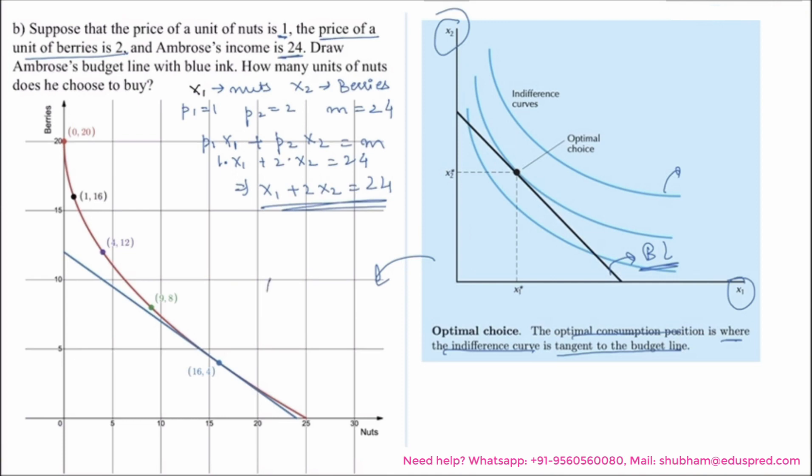And this consumption bundle is of the form X1, X2 where X1 is the units of nuts and X2 is the units of berries. Now the question says how many units of nuts does he choose to consume? That means Ambrose would choose to consume 16 nuts given the prices and income.